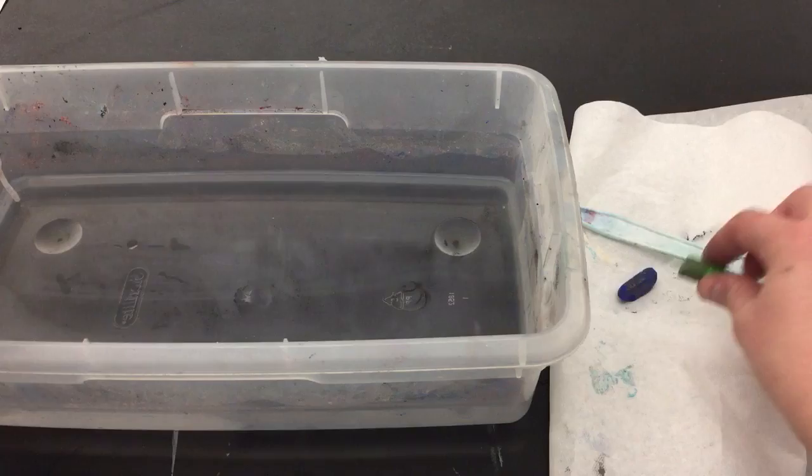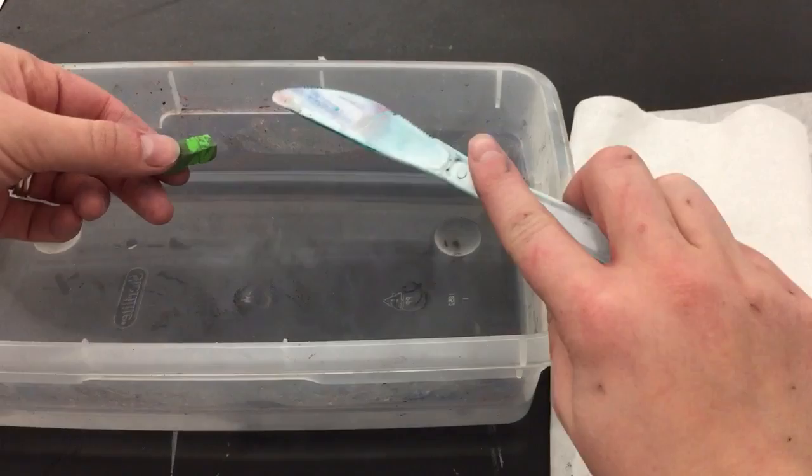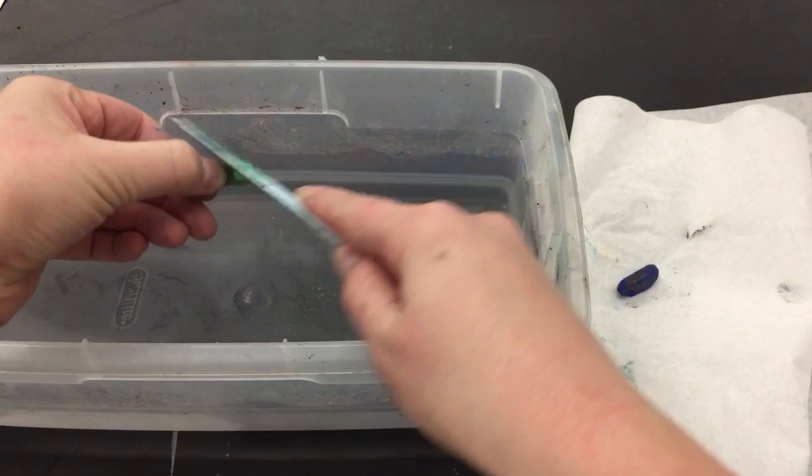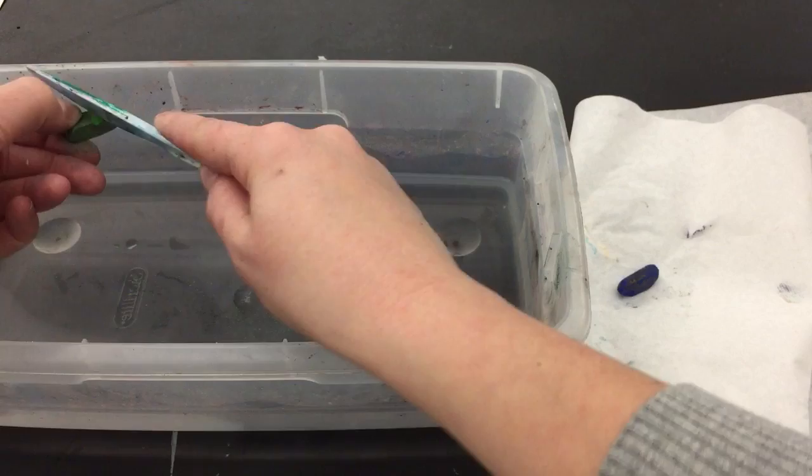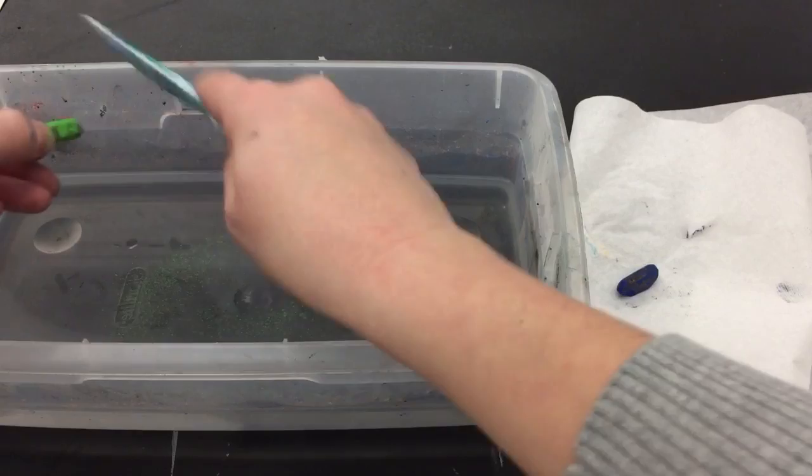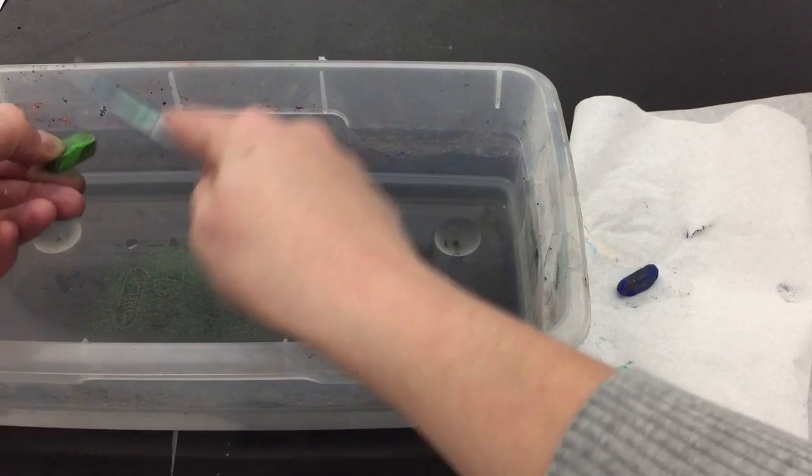Choose what colors you'd like from your chalk pastels. Take a plastic knife and use it to shave little pieces of the pastel into the water. Keep shaving little pieces in.